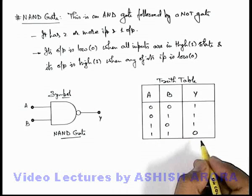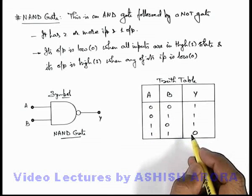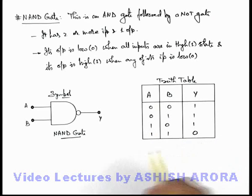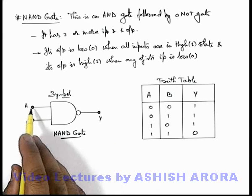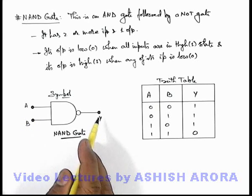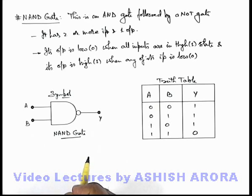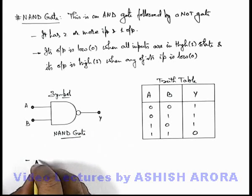So this is the way how we can draw the truth table, and using this truth table in the next section we'll study about the waveform analysis, that is when 2 digital signals are applied at the input terminals, how we can draw the output terminal by using truth table. Here we can also write 1 important thing.